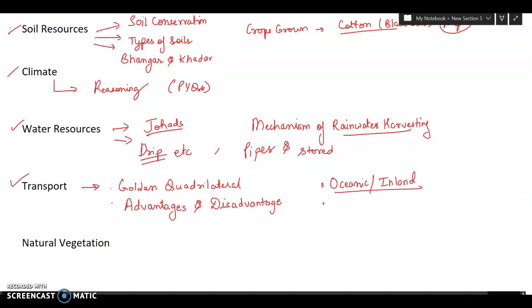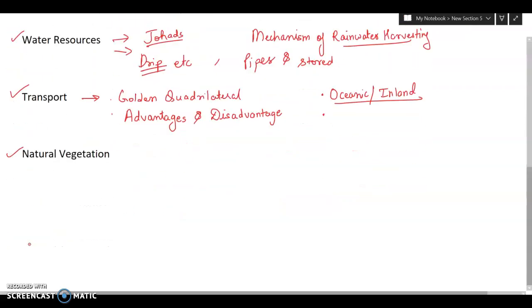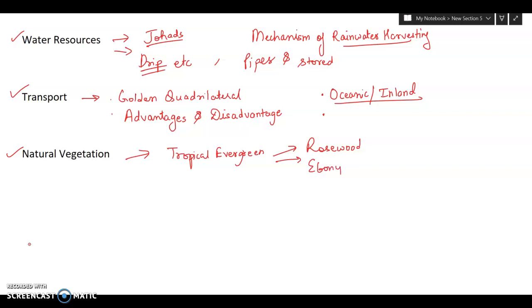Then we have natural vegetation chapter. In this, there are different types of forest like tropical evergreen. Then you can refer to its features, the important species like rosewood, ebony, toon, and so on. You can also refer to their uses. Then we have tropical deciduous.